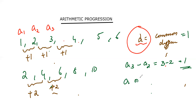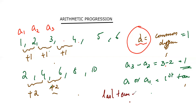A or a₁ is my first term. The last term here is six. So the last term — I'll write it as aₙ, or nth term. The nth term means it can be any term. Generally in arithmetic progression, we will use the nth term as the last term. So first term, second term, third term, nth term. Here it is the sixth term, obviously.